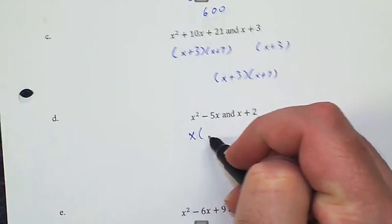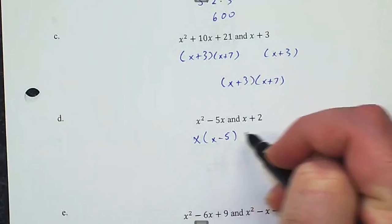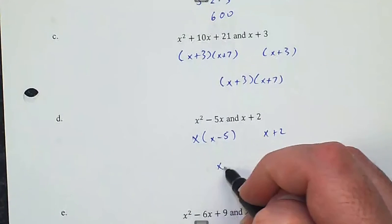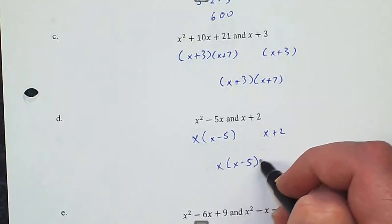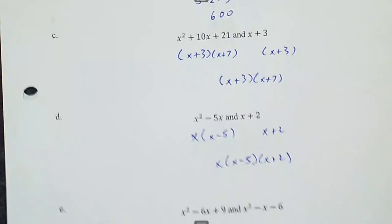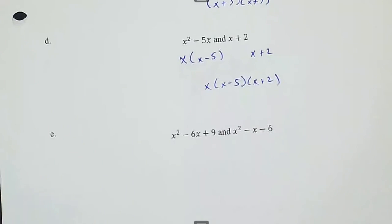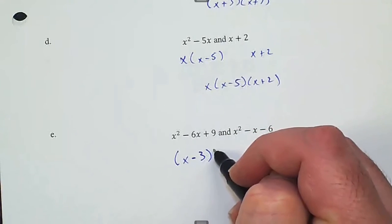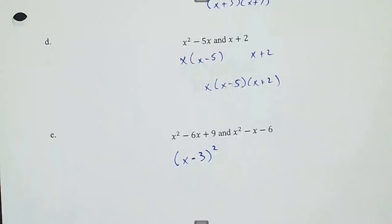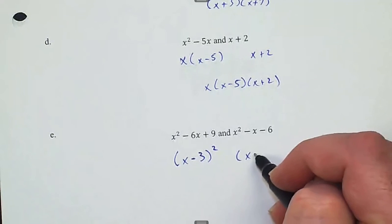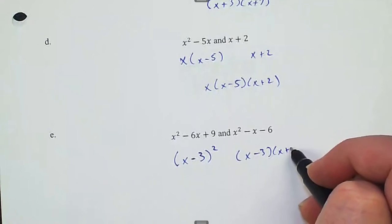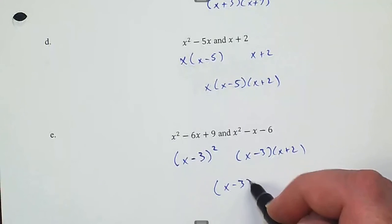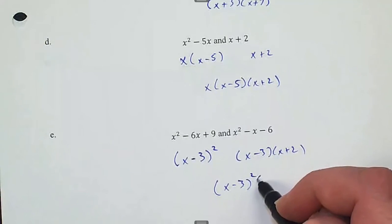For x(x − 5) and (x + 2), we need all three factors with no changes: x times (x − 5) times (x + 2). For the last one, we have (x − 3)² because it's (x − 3)(x − 3), and the other is (x − 3)(x + 2), giving a least common multiple of (x − 3)² times (x + 2).